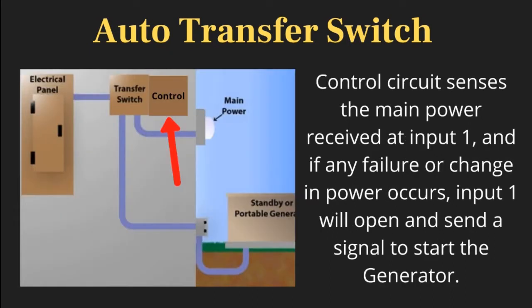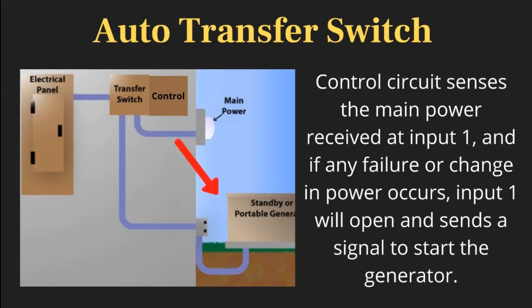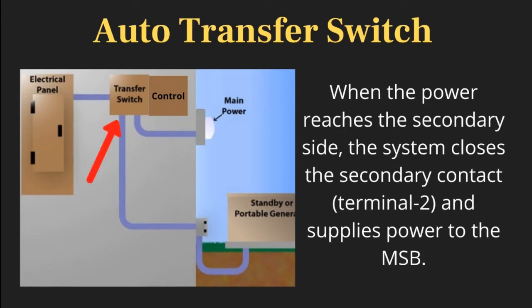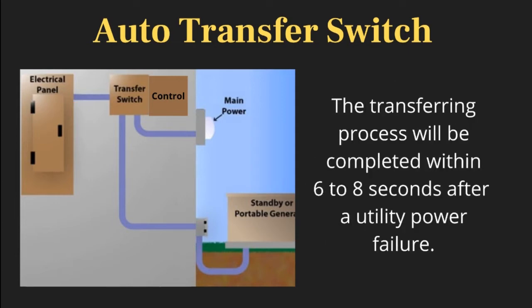The control circuit senses the main power received at input 1. If any failure or change in power occurs, input 1 will open and send a signal to start the generator. When the power reaches the secondary side, the system closes the secondary contact and supplies power to the MSB. The transferring process will be completed within 6 to 8 seconds after a utility power failure.